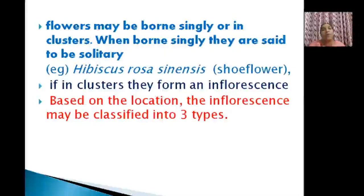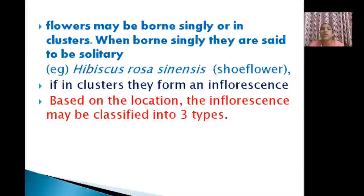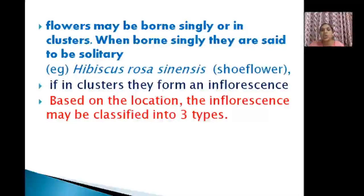When you look at banana flower, you can see a cluster of flowers. Similarly, when you look at Crotalaria, you can see clusters. Jasmine also occurs two or three in groups. This type of occurrence is known as inflorescence — flowers occurring in clusters.